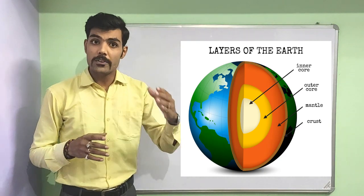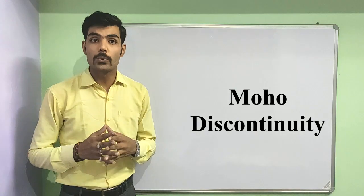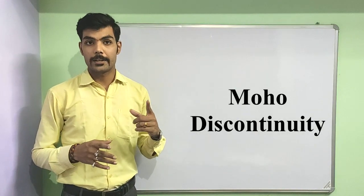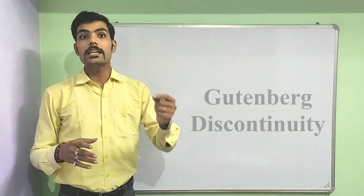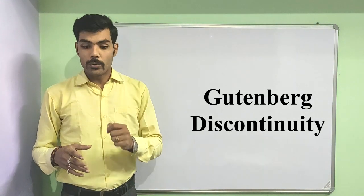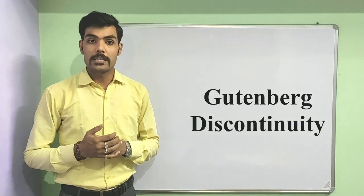The discontinuity which divides the crust and mantle is known as Moho discontinuity, whereas the discontinuity that divides the mantle and core is Gutenberg discontinuity.